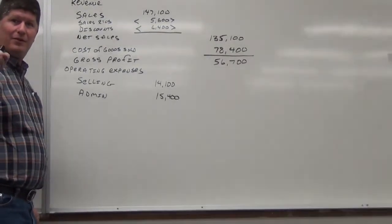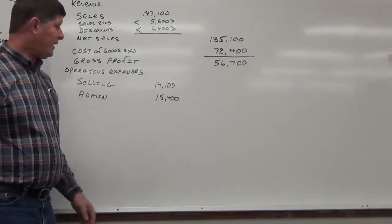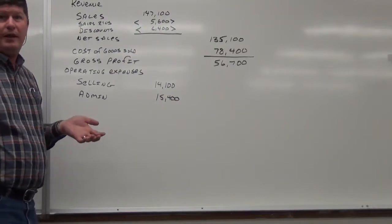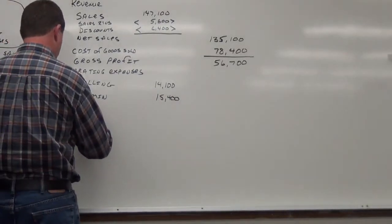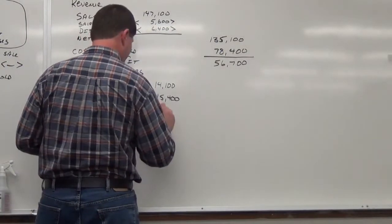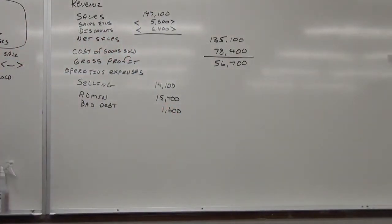Selling expenses. Okay. We've got selling. How much is that? $14,100. Okay. What else do we have? Admin expenses. Admin. At $15,000. Okay. Remember, I can abbreviate when I'm writing on the board. Can you guys abbreviate on the test? No. Nope. Good. Okay. That's fair, right? Yes.